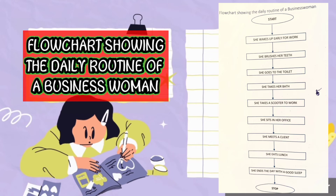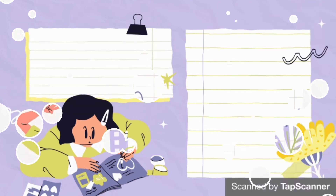After relaxing, she meets a client. After meeting a client, she eats her lunch. After eating lunch, she ends the day with a good sleep. The last shape is the oval stop.